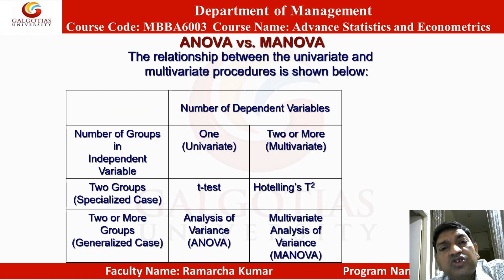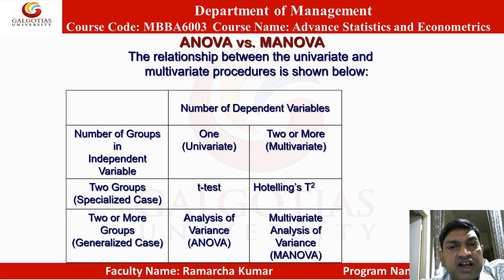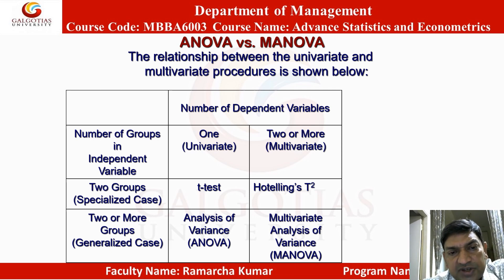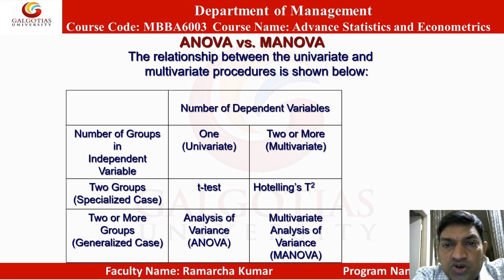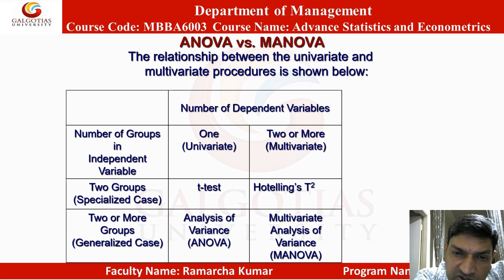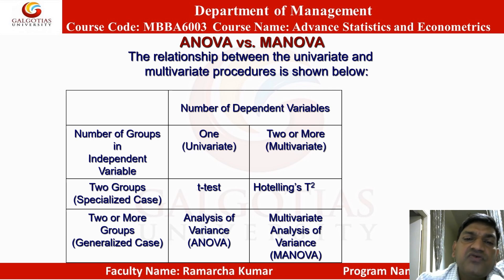The unique aspect of MANOVA is that it optimally combines the multiple dependent measures into a single value that maximizes the difference across groups. The relationship between univariate and multivariate procedures: if the number of dependent variables is 1 (univariate) and there are two groups (specialized case), we do a t-test; if there are two or more groups (generalized case), we do ANOVA. For the multivariate case with two or more dependent variables, with two groups use Hotelling's T-square, and with two or more groups use multivariate analysis of variance.